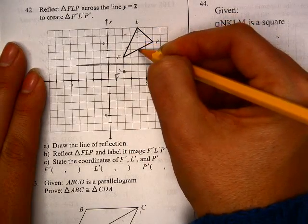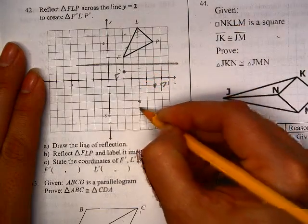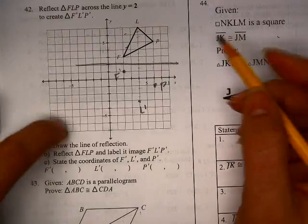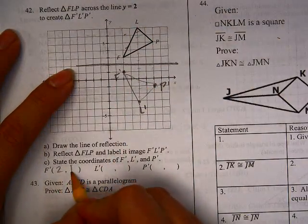And 1, 2, 3, 4, 5. 1, 2, 3, 4, 5. And there. I did it. And then I need to state them. So 2, 1. Done.